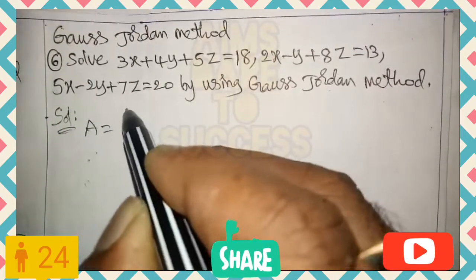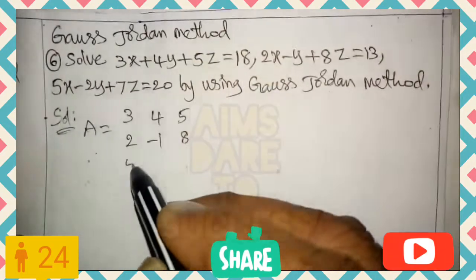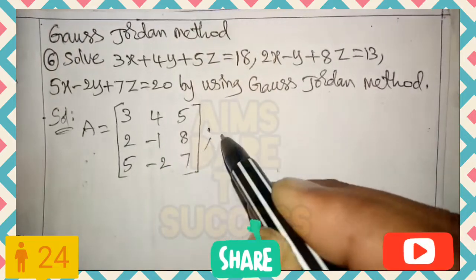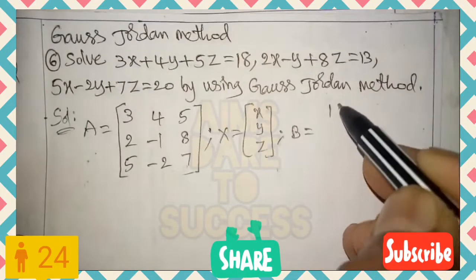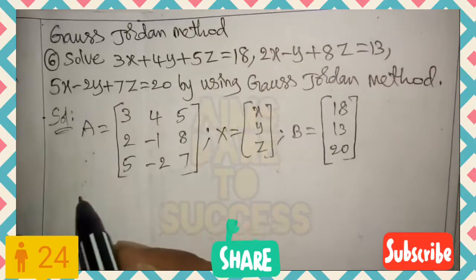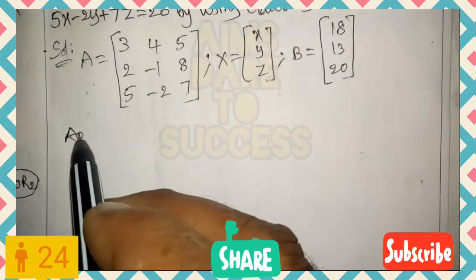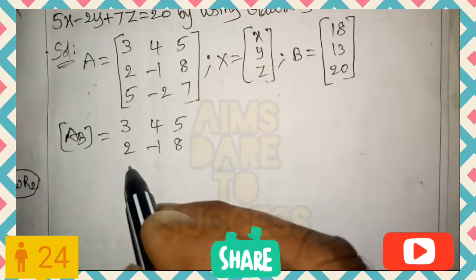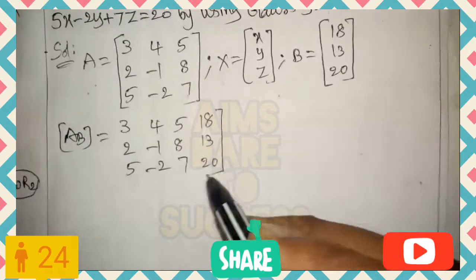We write matrix A using the xyz coefficients from the three equations: [3, 4, 5], [2, -1, 8], [5, -2, 7]. Matrix X contains variables x, y, z in column form. Matrix B contains constants 18, 13, 20. We combine A and B into one augmented matrix with a fourth column: 3 4 5 | 18, 2 -1 8 | 13, 5 -2 7 | 20.